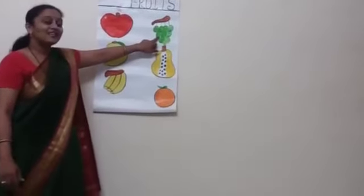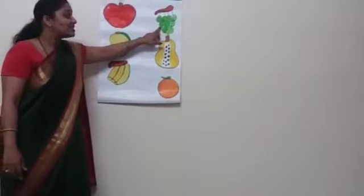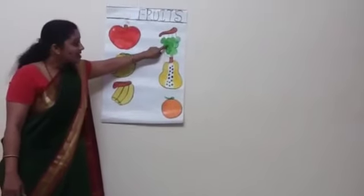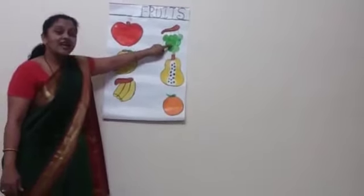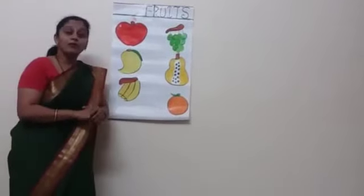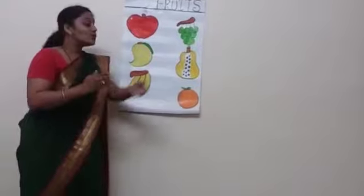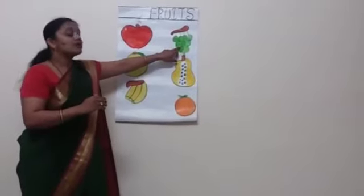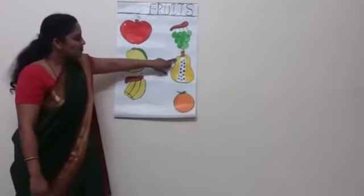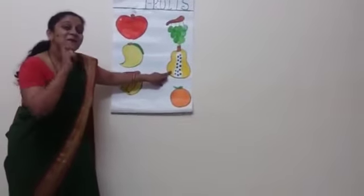Now next, what is this? Grapes. It is a grape, and the color of grapes is green. You know that grapes are found in a bunch — you find grapes in a bunch. And the next fruit is grape.